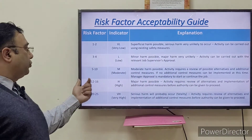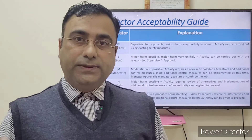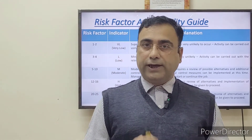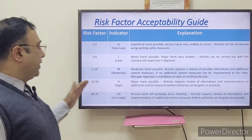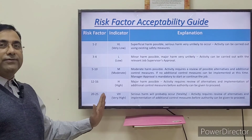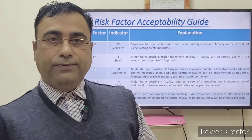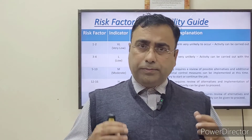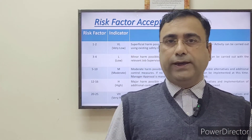A risk factor of 12 to 16 is high — you must look for alternatives or implement a digital control measure, and your factory manager or factory head must be informed and must give approval before starting the job. A risk factor of 20 to 25 is very high — serious harm or multiple fatalities are possible. You must introduce many additional controls, inform the head of the organization such as the director or CEO, and also provide prior intimation to relevant authorities such as hospital staff. Only after implementing controls and receiving all approvals should you start the job.